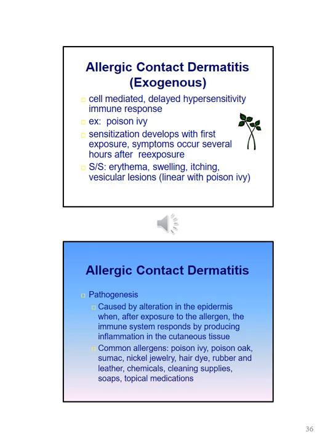Allergic contact dermatitis is a cell-mediated delayed hypersensitivity immune response. An example includes poison ivy. Sensitization develops with the first exposure; symptoms occur several hours after re-exposure. Signs and symptoms include erythema, swelling, itching, and vesicular lesions. The pathogenesis involves alteration in the epidermis after exposure to the allergen, where the immune system responds by producing inflammation in the cutaneous tissue. Common allergens include poison ivy, poison oak, sumac, nickel jewelry, hair dye, rubber, leather chemicals, cleaning supplies, soaps, and topical medications.